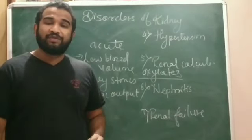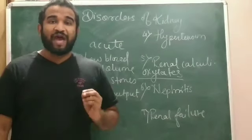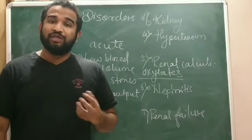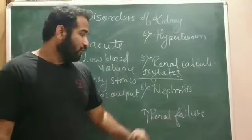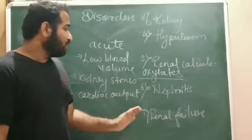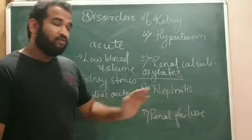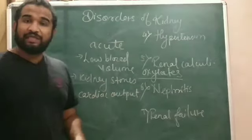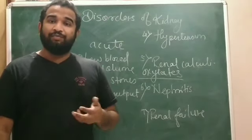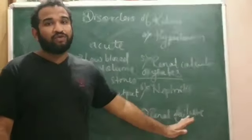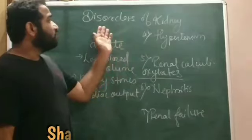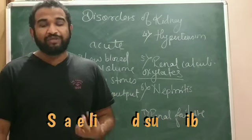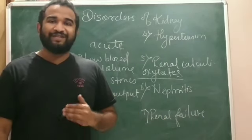More and more consumption of anti-inflammatory drugs or antibiotics also leads to renal failure. So causes of renal failure include low blood volume, kidney stones, and less cardiac output — meaning the heart is pumping less blood. These were some of the disorders of the kidney. In the next video, we will study about micturition and other points related to the human excretory system.